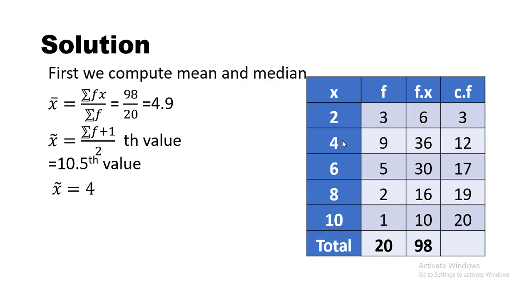To summarize: for the mean, the formula is ΣFX / ΣF; for the median, we find the (ΣF + 1)/2 th position and search it in the CF column. Since the value 10.5 falls in the class where both positions 10 and 11 lie, the corresponding observation is 4, so the median value is 4.